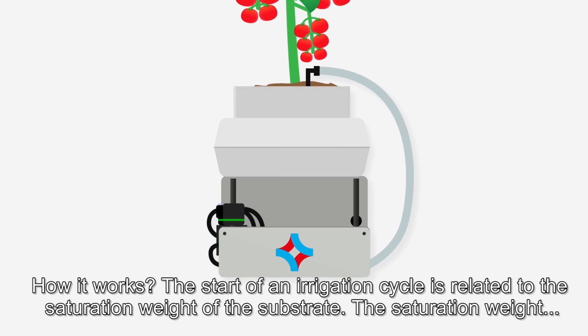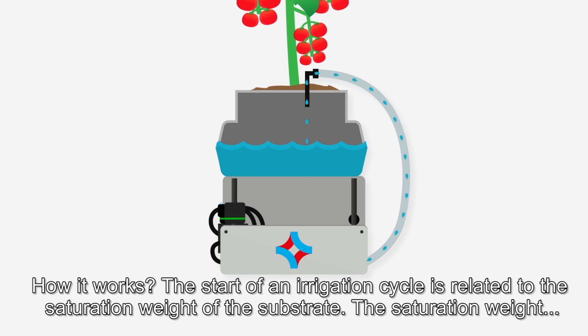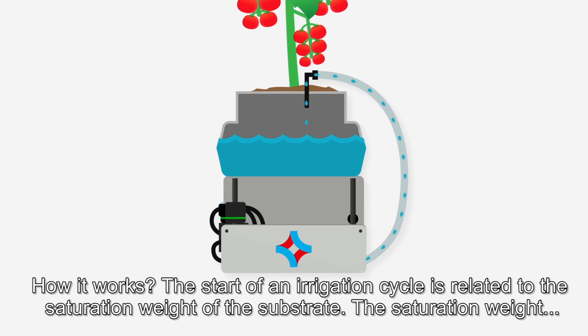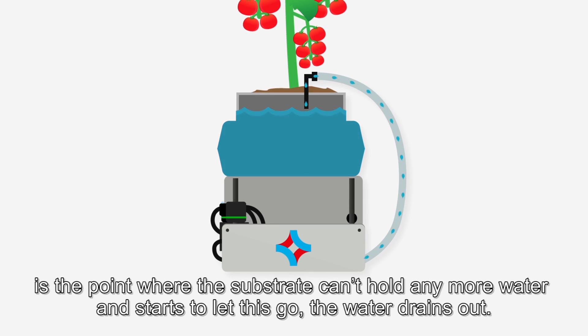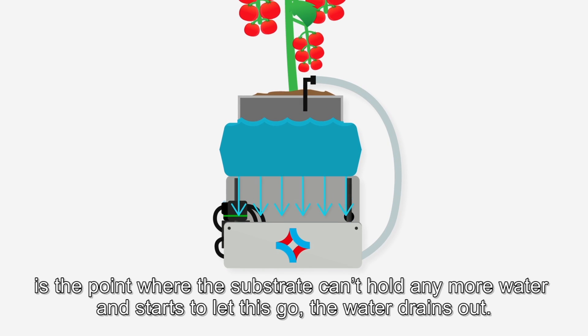How it works. The start of an irrigation cycle is related to the saturation weight of the substrate. The saturation weight is the point where the substrate can't hold any more water and starts to let this go. The water drains out.